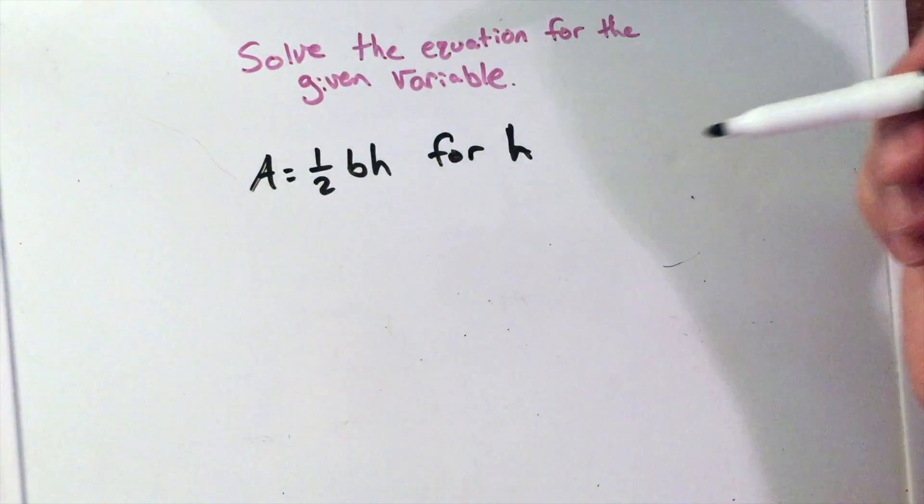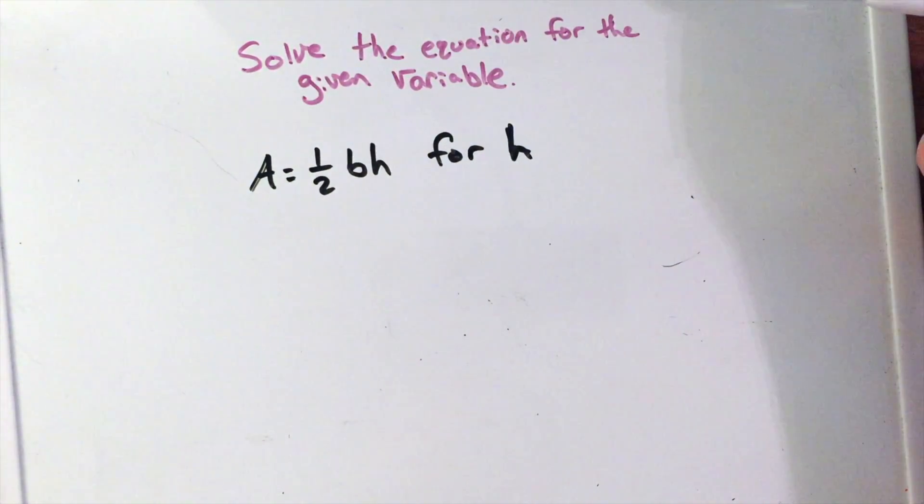Now we want to recognize this formula, 1/2 base times height, the formula for the area of a triangle. That's what we got this equation for. And we want to get h by itself.